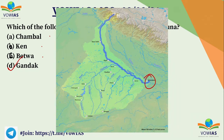The meeting point is known as Triveni Sangam. Yamuna is the largest as well as the longest tributary of Ganga. You can see the path it takes, flowing all the way through Delhi and Agra.